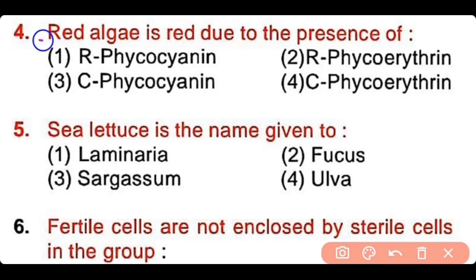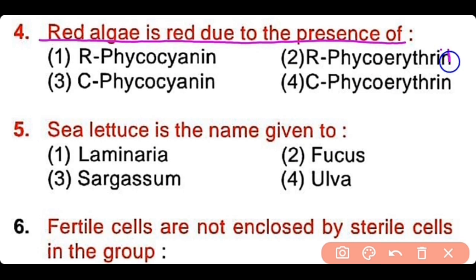Question number 4: Red algae is red due to the presence of r-phycocyanin, r-phycoerythrin, c-phycocyanin, or c-phycoerythrin? The correct answer is option 2. R-phycoerythrin is a red pigment present in red algae; because of it, the color of algae is red.